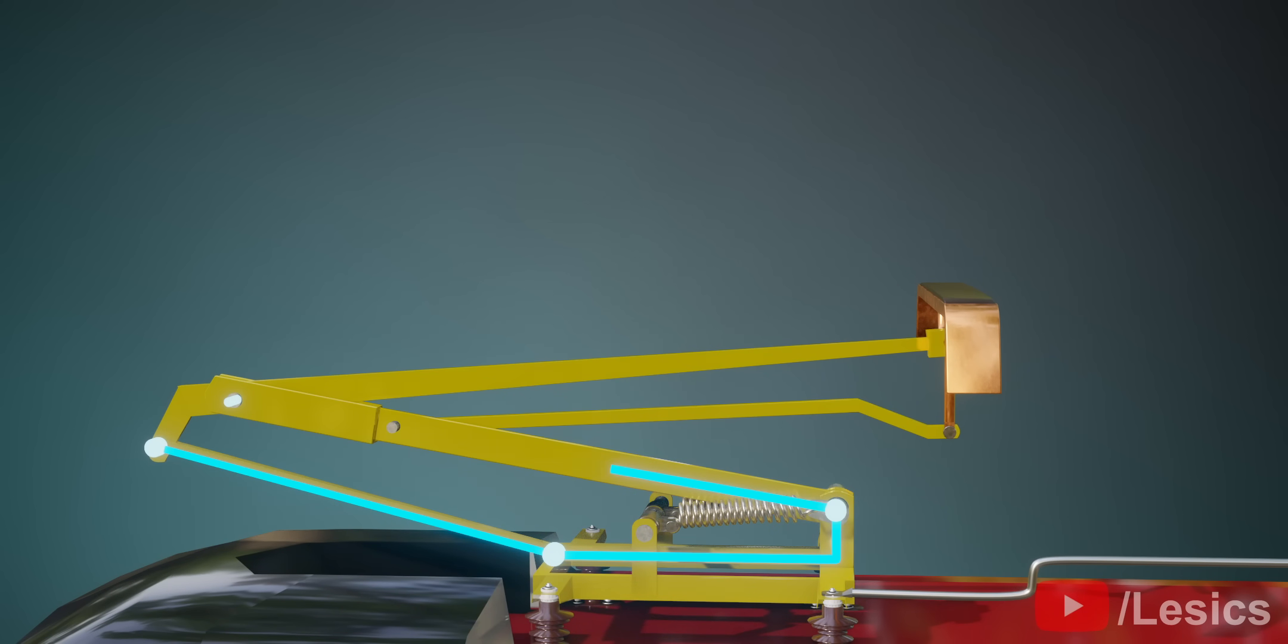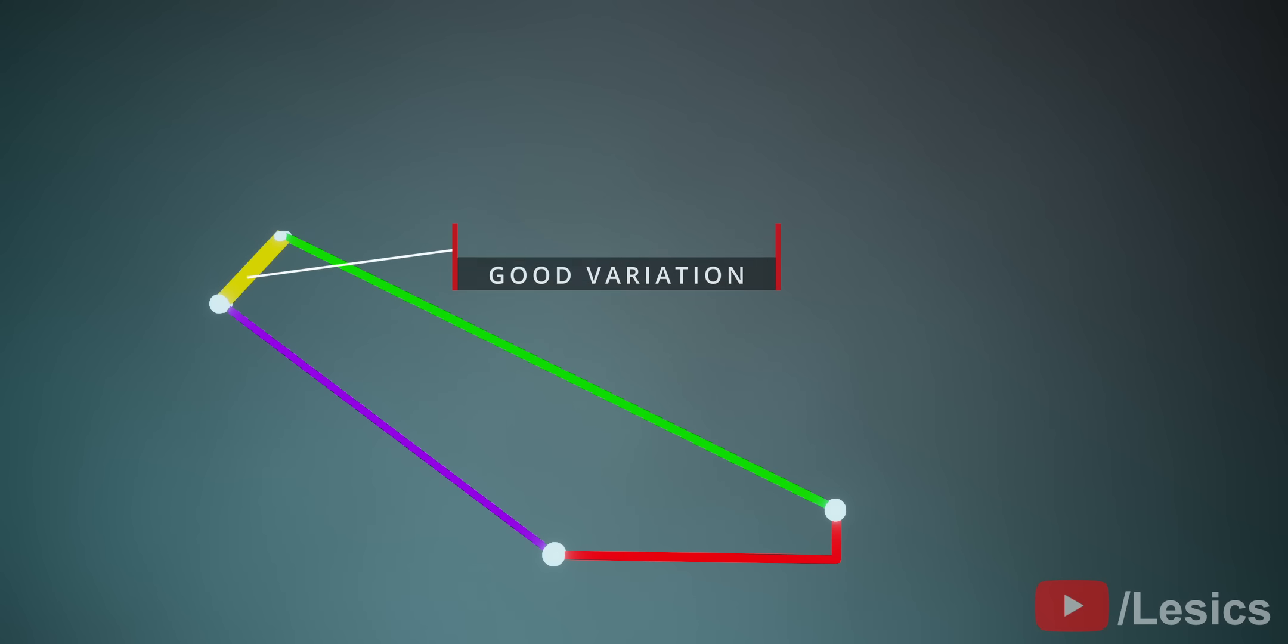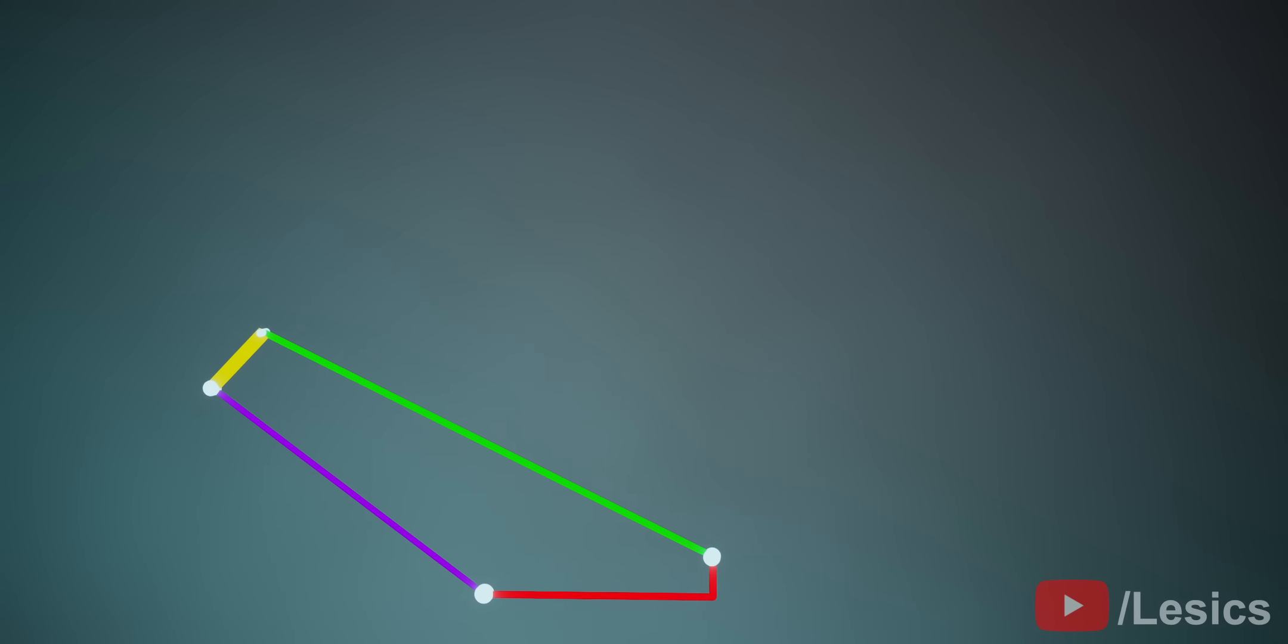Does the lower portion of this pantograph seem familiar to you? This is a four-bar arrangement. If we rotate this green bar clockwise, observe what happens to the small yellow bar. It's going for a good angular variation. Let's extend this yellow bar and attach the collector head at its tip. You can see that this mechanism gives a good height variation to the collector head.